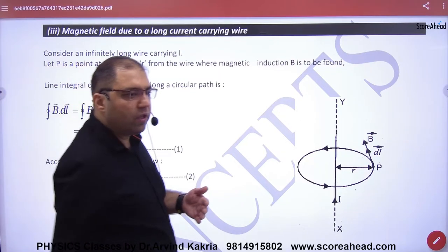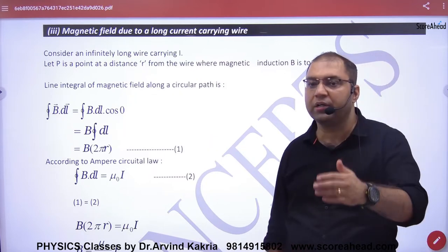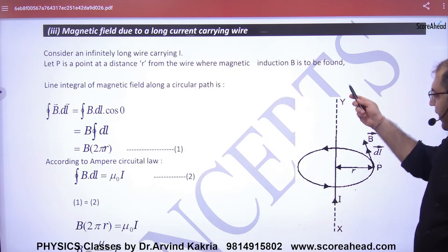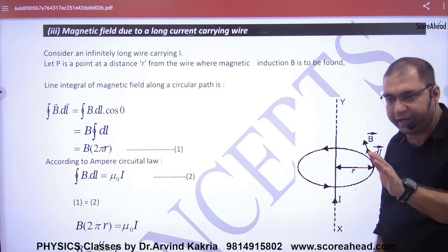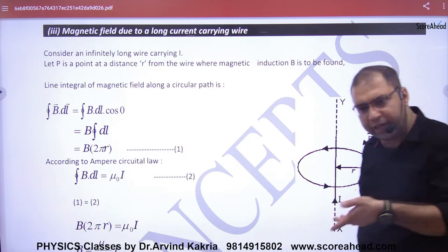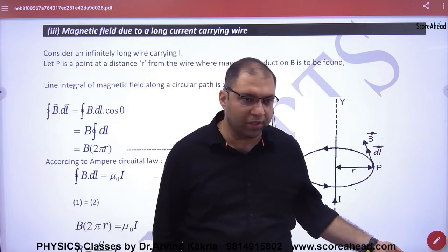Next application of Ampere's circuit law: magnetic field due to a long current carrying wire. Consider an infinitely long current carrying wire, and you have to find the field at a distance r. Everyone knows its value: B equals μ₀ by 4π times 2I by r. But why?